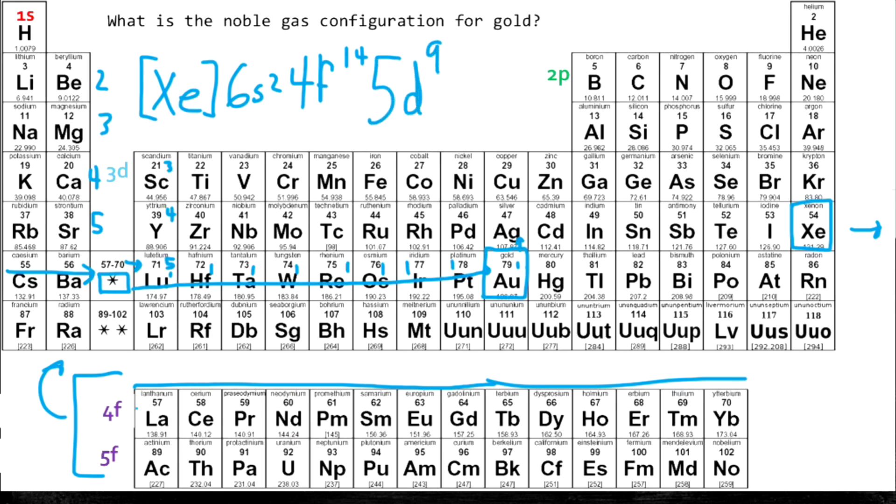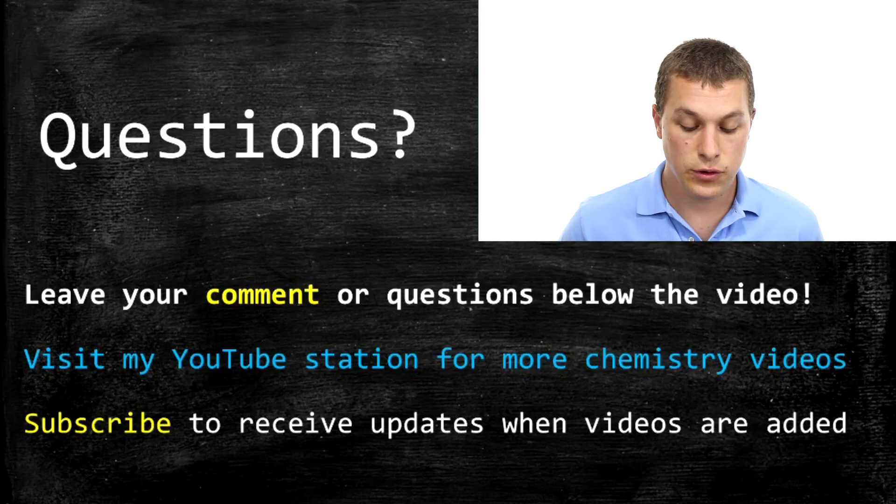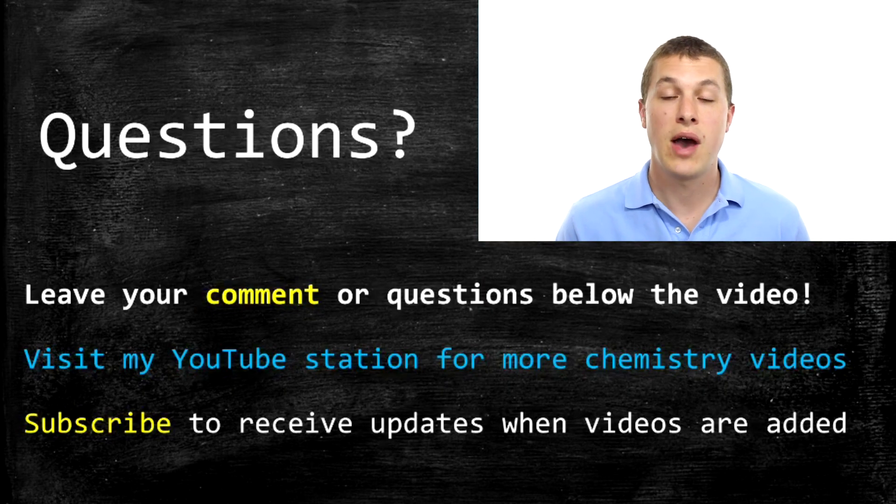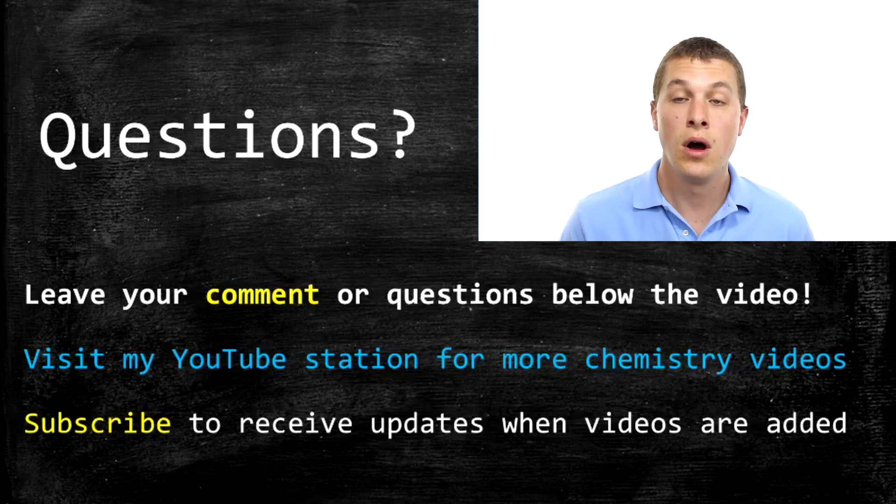So this is where we really save time with the noble gas configuration. Once we are really low down on the periodic table, it's a nice shortcut to have. So thanks for watching this episode of Real Chemistry. If you have any questions or comments, leave them below. Also subscribe to receive updates about future videos.